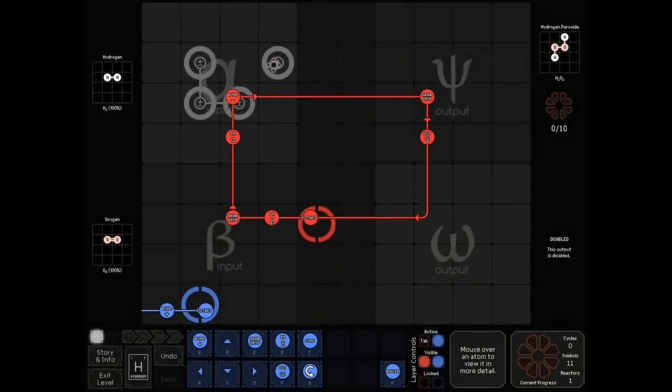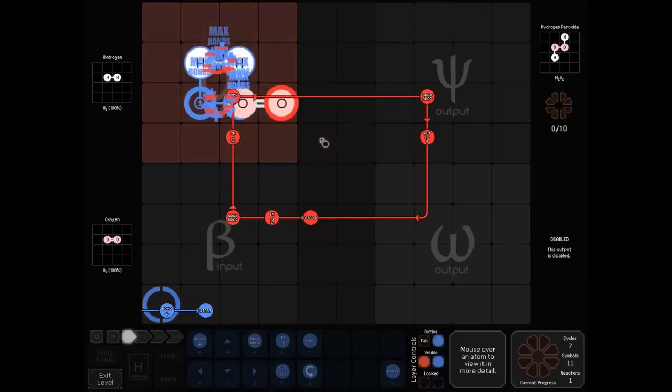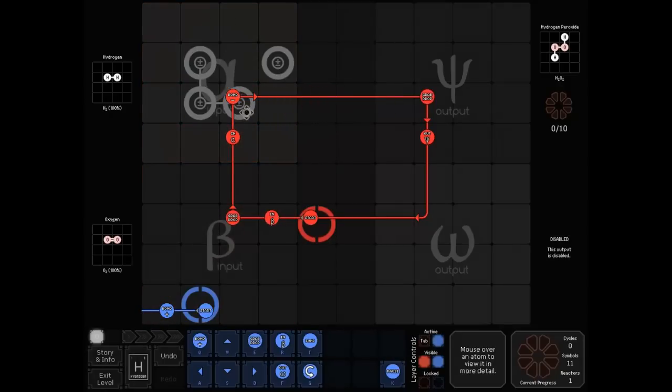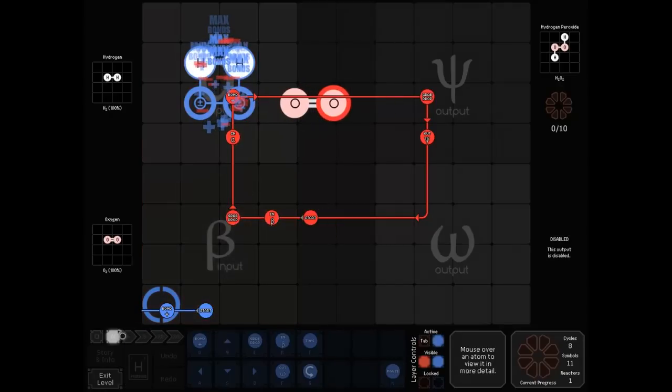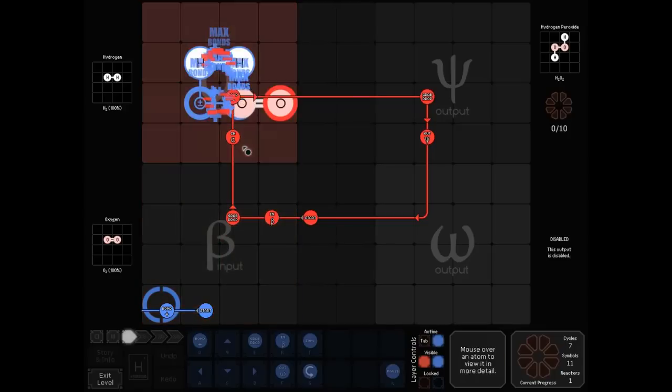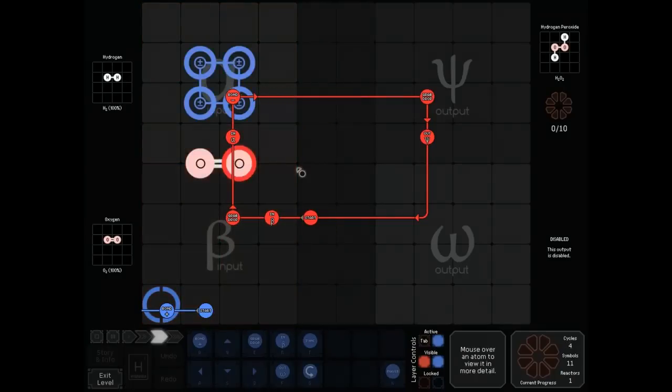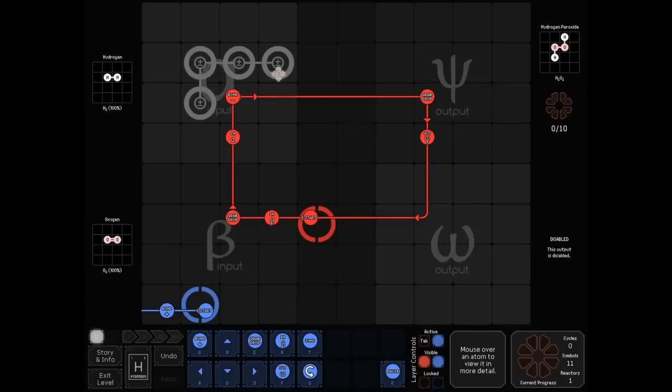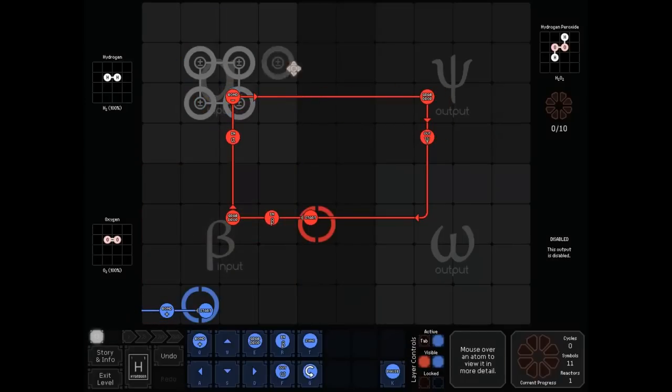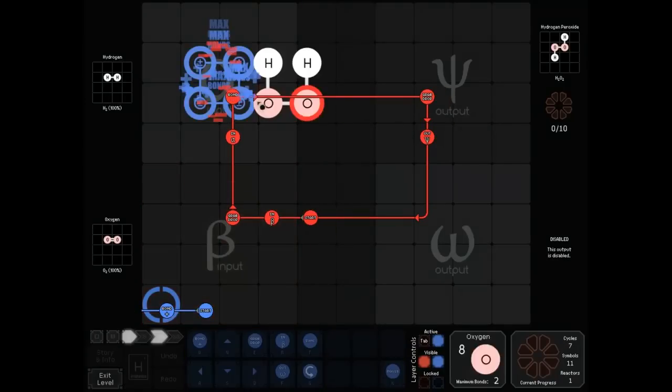So you might be asking, how do we know what the bonder priority is? Is there a way we can look at this? No. There really isn't. You kind of just got to keep playing with it until you find the one that works. Sometimes it doesn't like working. I don't know. There.